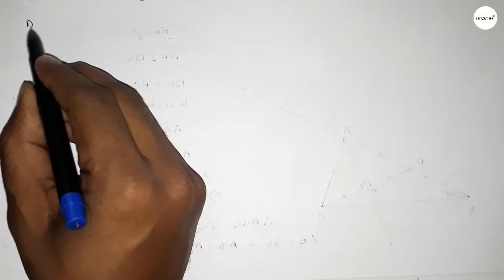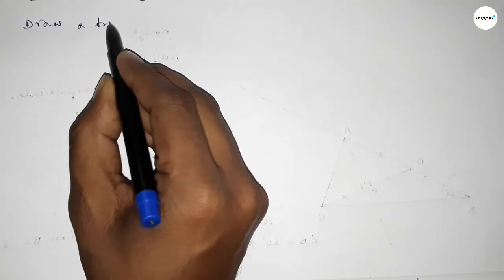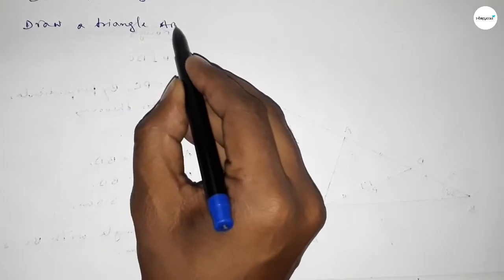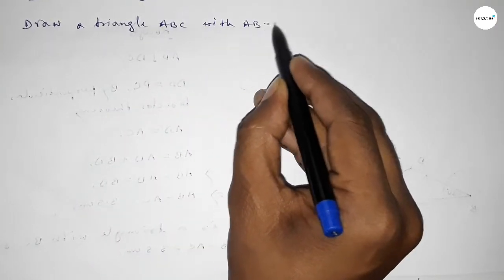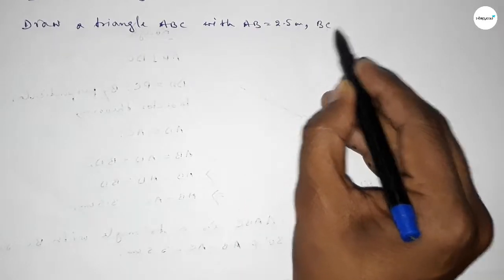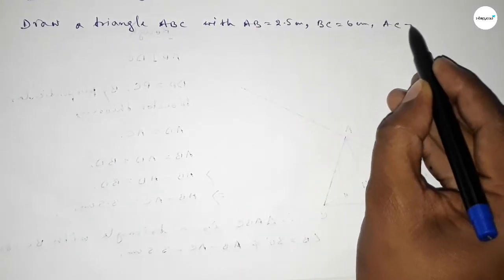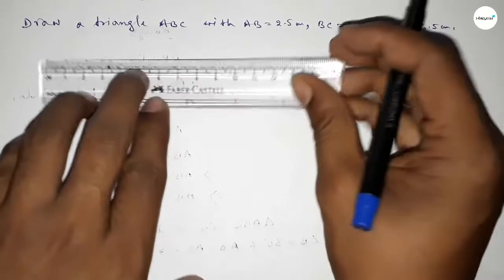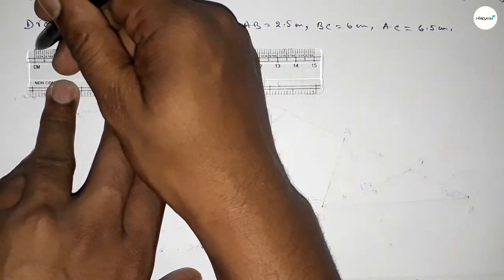Hi everyone, welcome to SI Share Classes. Today in this video we have to draw a triangle with AB equal to 2.5 centimeter, BC equal to 6 centimeter, and AC equal to 6.5 centimeter. So let's start the video.